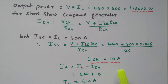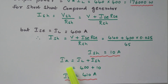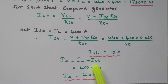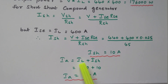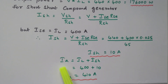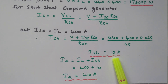Now from that we can find the armature current. Ia equals IL plus Ish. For a short shunt generator, the current splits into shunt field and series field plus load current, so IL plus Ish gives Ia. IL is 400 ampere, Ish we calculated as 10 ampere, so 400 plus 10 gives Ia = 410 ampere.